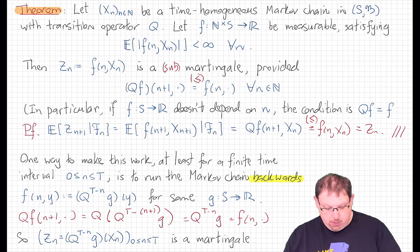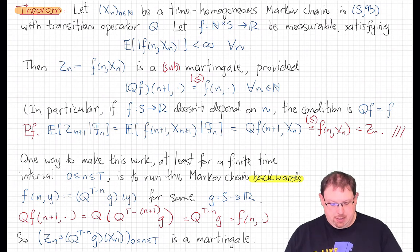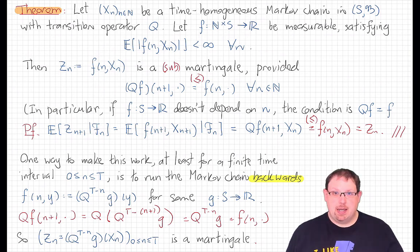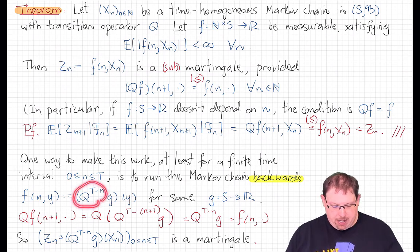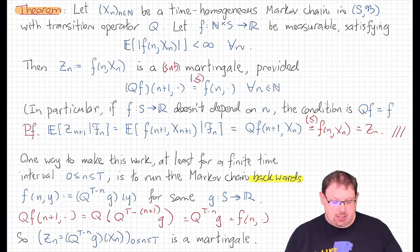That shows by our theorem that this finite-time-interval martingale from time 0 up to time T, defined to be g(x_T) at the endpoint, is a martingale. We'd love to continue this past time T, but that would require taking negative powers of q, which may not be possible since q might not be invertible. However, there are situations where it is, and we can use this construction to produce a martingale for all time.